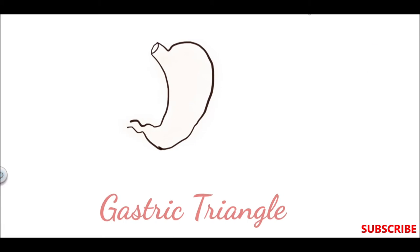Next is the gastric triangle. So this triangle is bounded on the right side by the lower border of the liver. On the left side it is bounded by the left costal margin.